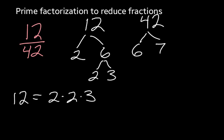Well 7 is prime, but 6 is not. So 6 can be split into 2 times 3. My prime factorization for 42 is 2 times 3 times 7.